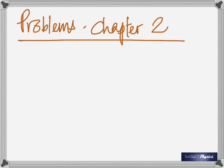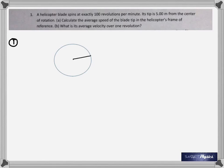Here are the problems from Chapter 2 for college physics. The first one: the helicopter blade spins at exactly 100 revolutions per minute. Its tip is 5 meters from the center of rotation. Calculate the average speed of the blade tip in the helicopter's frame of reference.